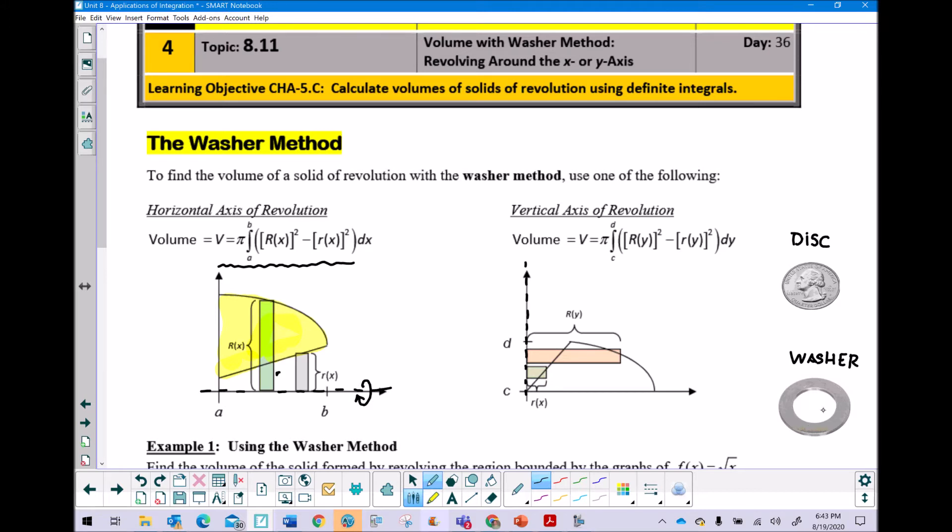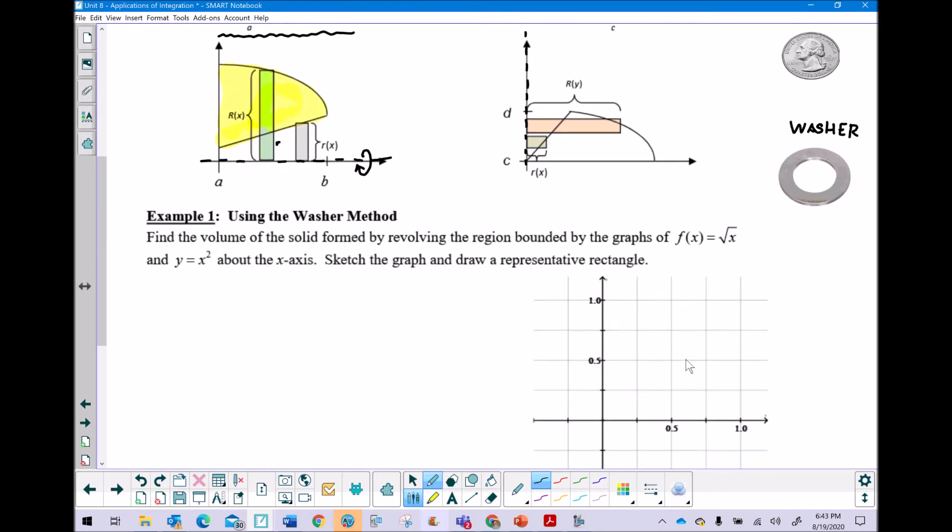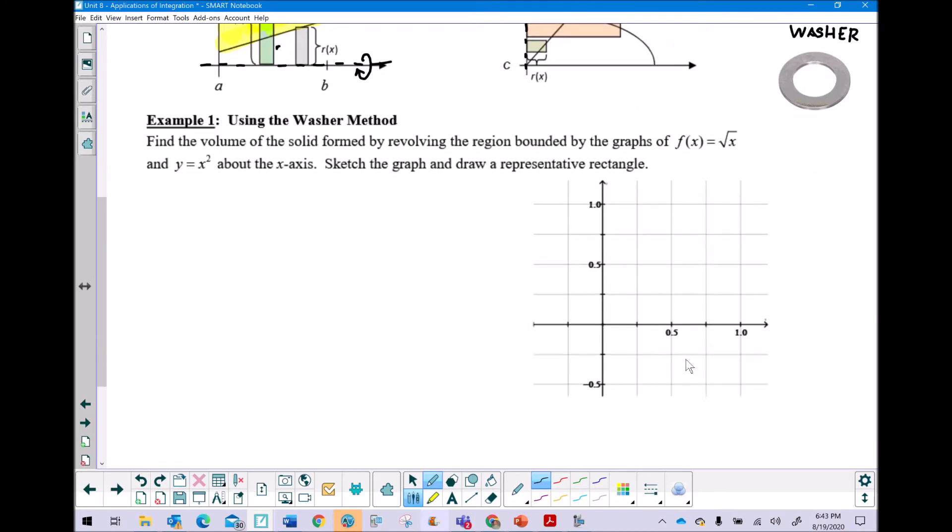Let's go ahead and take a look at an example. It says find the volume of the solid formed by revolving the region bounded by the graphs of f of x equal the square root of x and y equal x squared about the x-axis. Sketch a graph and draw the representative rectangle.